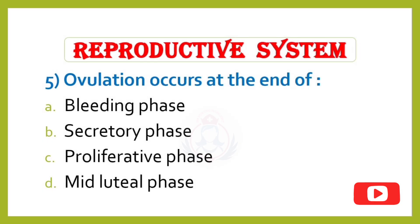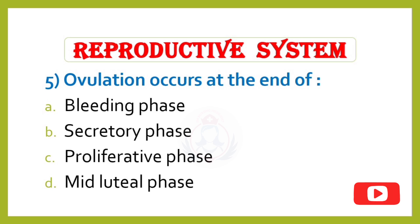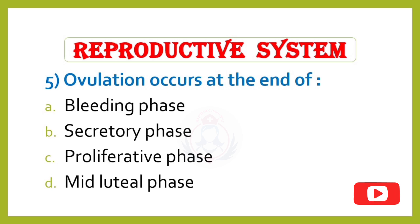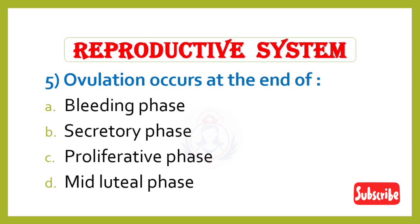Question 5. Ovulation occurs at the end of: Option A – Bleeding phase, Option B – Secretory phase, Option C – Proliferative phase, Option D – Midluteal phase. Correct answer is Option C: Proliferative phase.